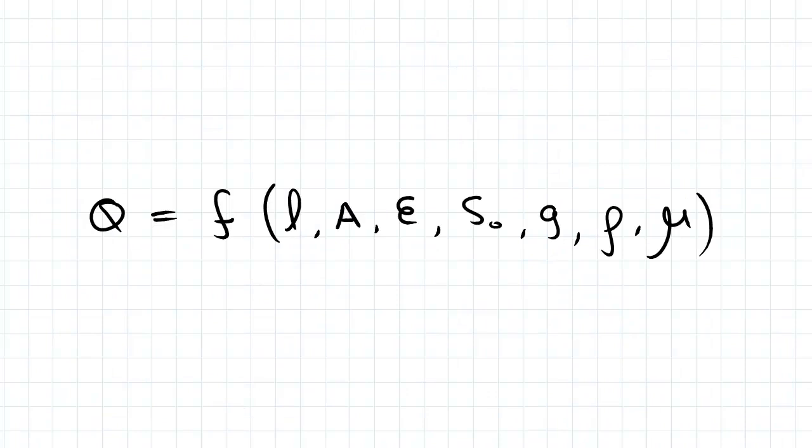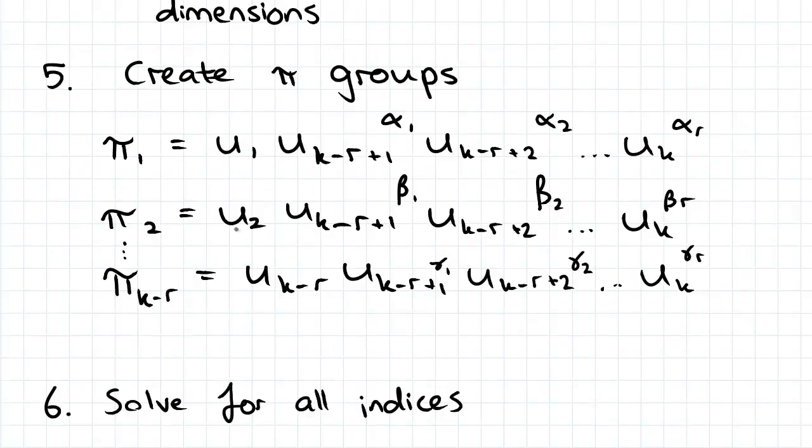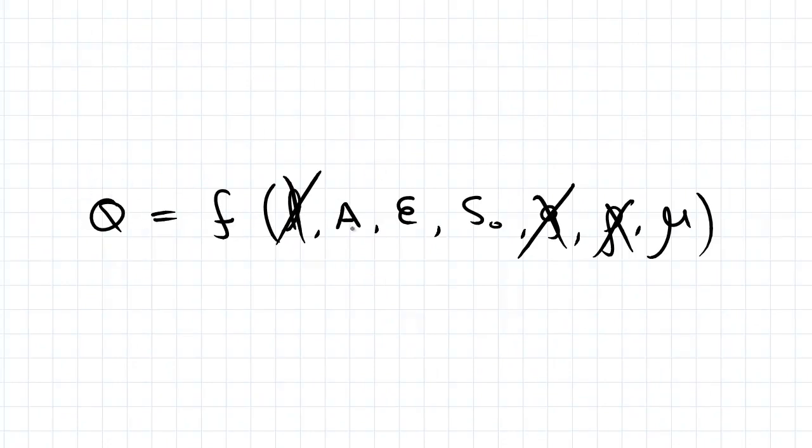So, this is our function. We've identified length, g, and rho as our repeating variables. So, we cross them out from here, and from that first term, which was u1, u2, all the way to uk,r, we're just cycling through each of the other terms.